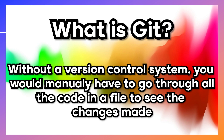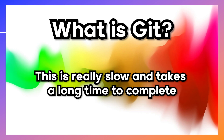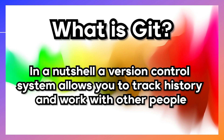Without a version control system you would have to manually go through all the code in a file to see the changes made. This is really slow and it takes a lot of time to complete. In a nutshell a version control system allows you to track history and work with other people.